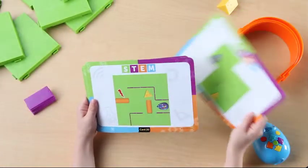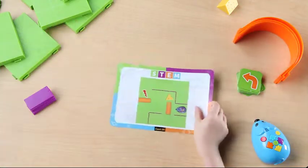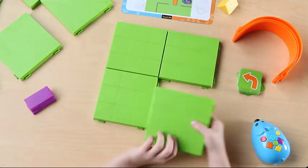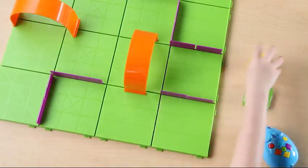To start, pick an activity card and build the featured maze, or you may choose to build your own. Connect the maze grid pieces and add any maze walls, tunnels, and the cheese.